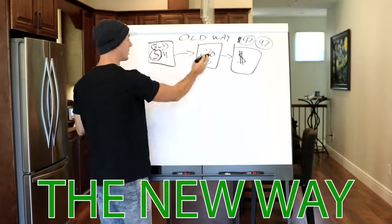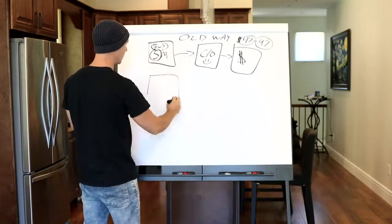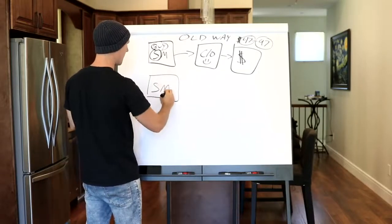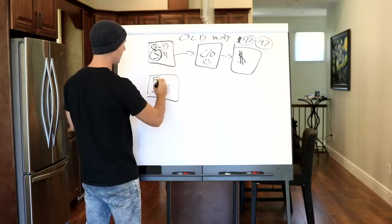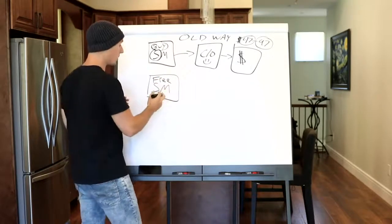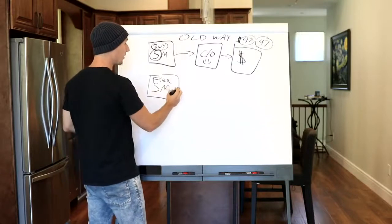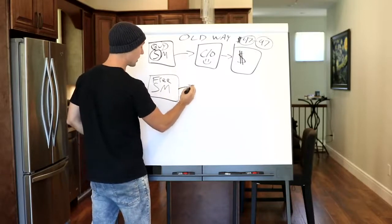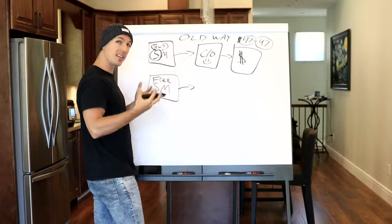So the way to sell a higher ticket program is to do the following. Rather than going on social media and saying checkout page, go on social media and provide free value, free value, completely free, helpful stuff. Once you posted that, you can say, by the way, if you want to learn more, go check out my free training, my free in-depth training.